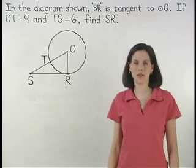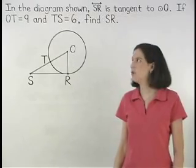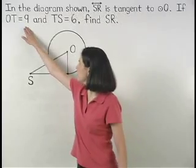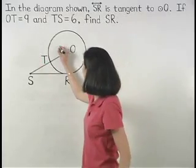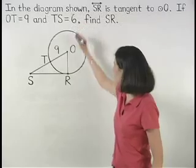Our first step in this problem is to label the diagram. We know that OT equals 9 and TS equals 6.